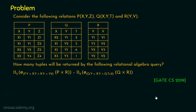Let's see the question. Consider the following relations: P with the attributes x, y and z; relation Q with the attributes x, y and z; and the relation R with the attributes y and v. The values are given for the relations P, Q and R.